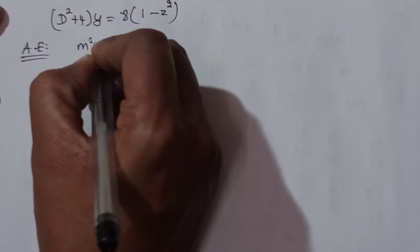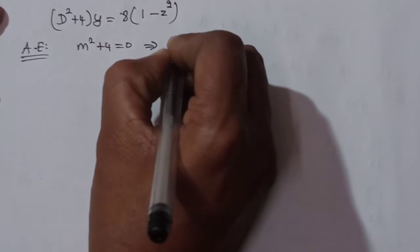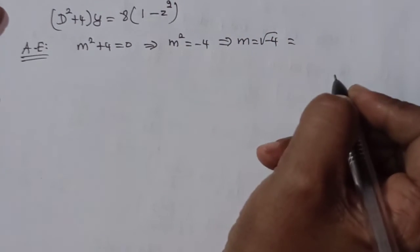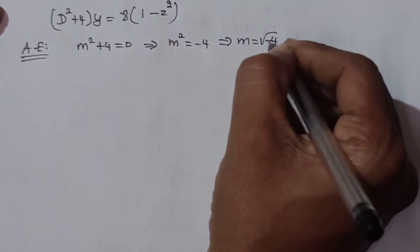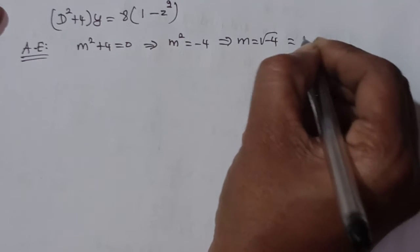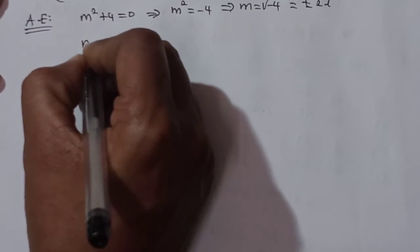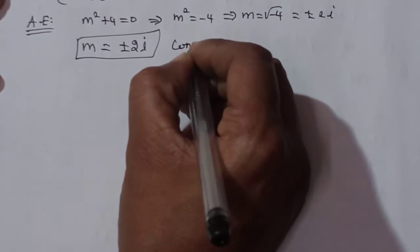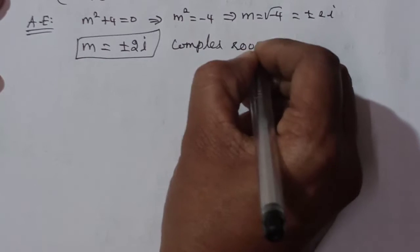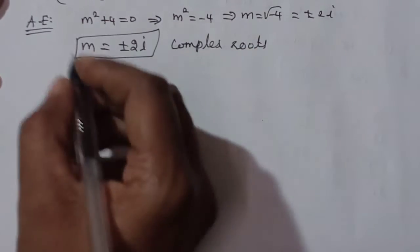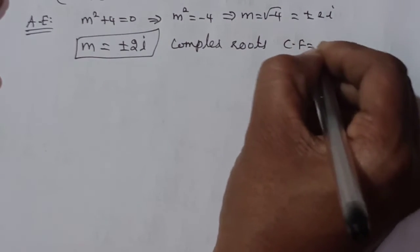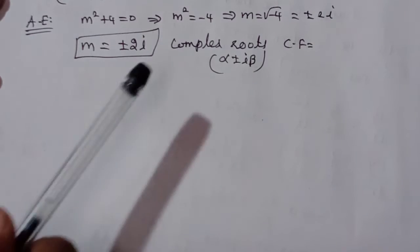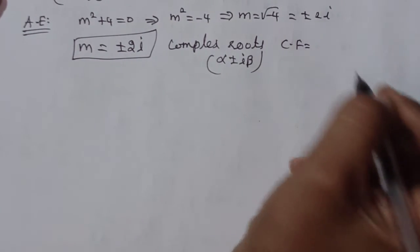The auxiliary equation is m² + 4 = 0, giving m² = −4, so m = ±2i. These are complex/imaginary roots of the form α ± iβ, where α = 0 and β = 2.